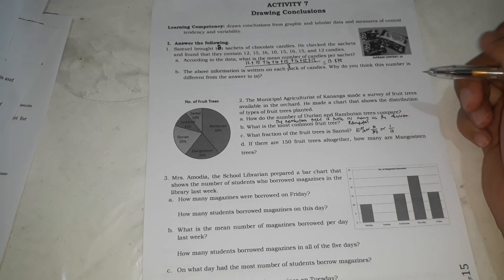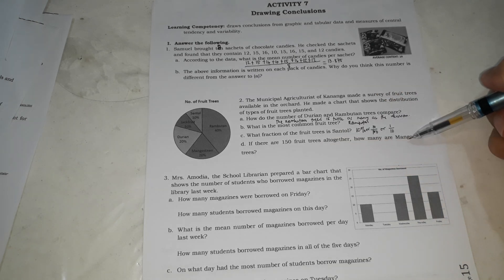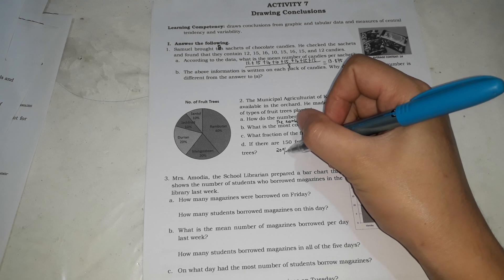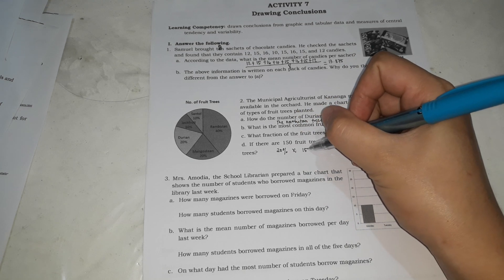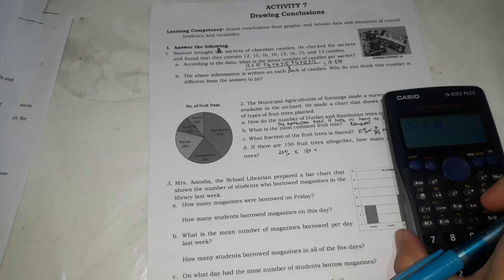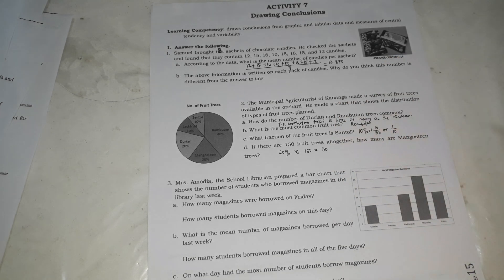If there are 150 fruit trees altogether, how many are mangosteen trees? The mangosteen is 20%. 20% ng 150, just multiply. 150 times ng 20% in decimal is 0.2 or 0.20. It times na natin yan, the answer is 30. Ibig sabihin, there are 30 mangosteen. Kapag 150, lahat-lahat ng trees.